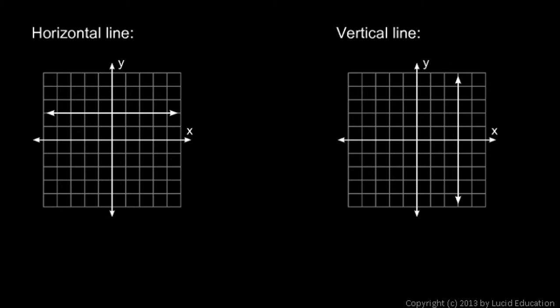Let's look at two special cases of slope. The first is a horizontal line. You see it right there. A horizontal line has a slope of zero.